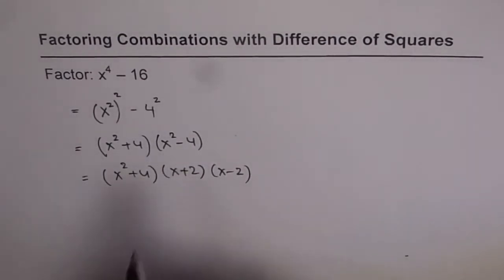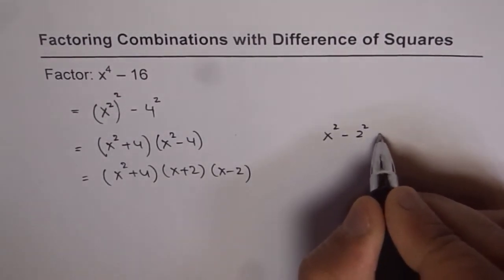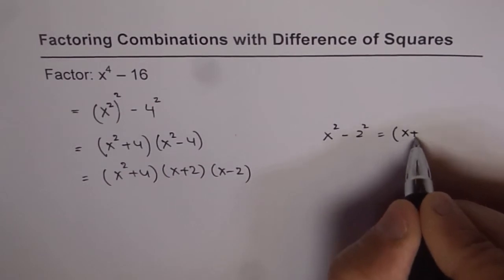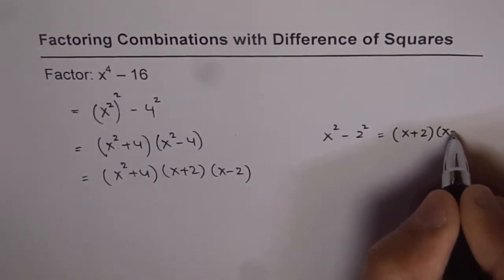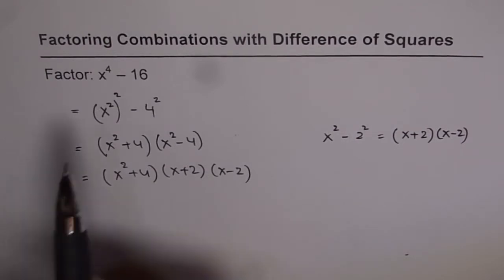But x squared minus 4 is, since 4 can be written as 2 squared. So we can write this as x squared minus 2 squared, which equals x plus 2 times x minus 2 using difference of squares.